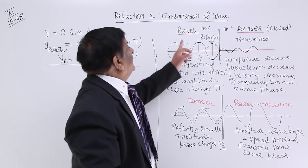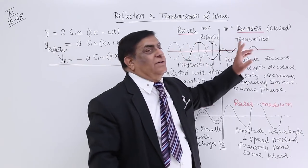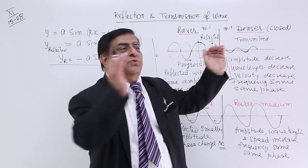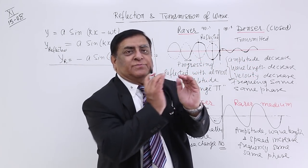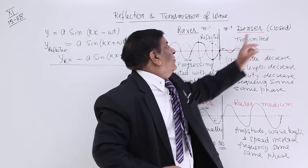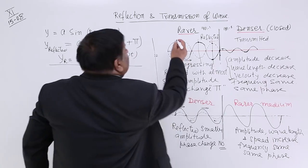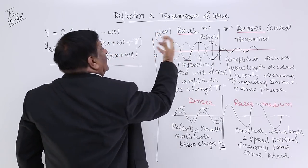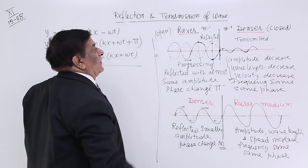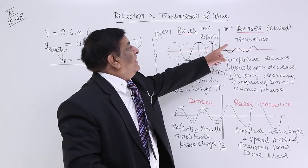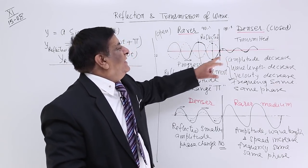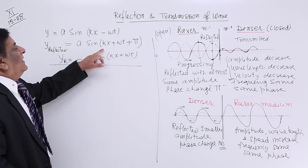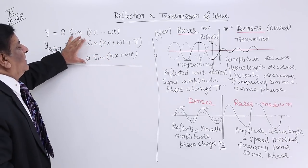This happens when the wave moves from rarer to denser medium, or equivalently from an open medium to a closed medium. These are the conditions of reflection and these are the corresponding equations.